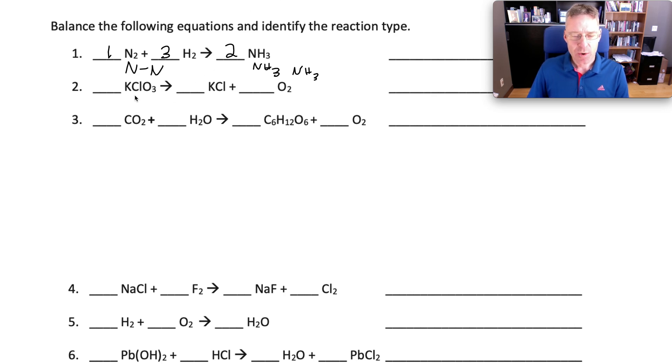The second question, we have 3 different elements now: potassium, chlorine, and oxygen. There's 1 potassium at the beginning, 1 potassium at the end, 1 chlorine at the beginning, 1 chlorine at the end. There are 3 oxygen at the beginning, and only 2 at the end.